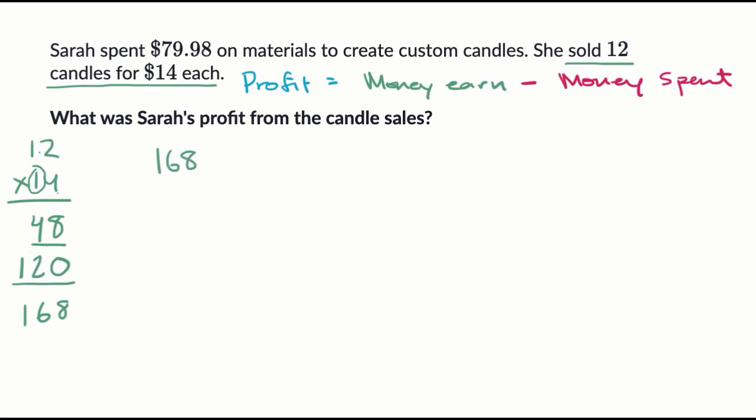And what is the money spent? Well, it says that Sarah spent $79.98. So minus 79.98. If I figure this out, I know what the total profit is. Some of you might be able to do this in your head, but I will just break this down, just to make this a little bit more straightforward.